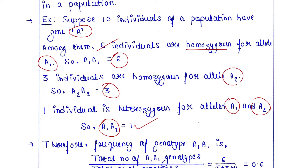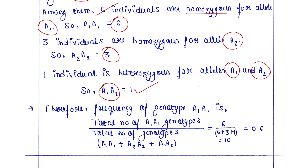To calculate the frequency of genotype A1A1: take the total number of A1A1 genotypes divided by the total number of genotypes (A1A1 + A1A2 + A2A2). A1A1 is present six times, A2A2 three times, and A1A2 once, giving a total of ten. So the frequency of A1A1 is 6 divided by 10, which equals 0.6.